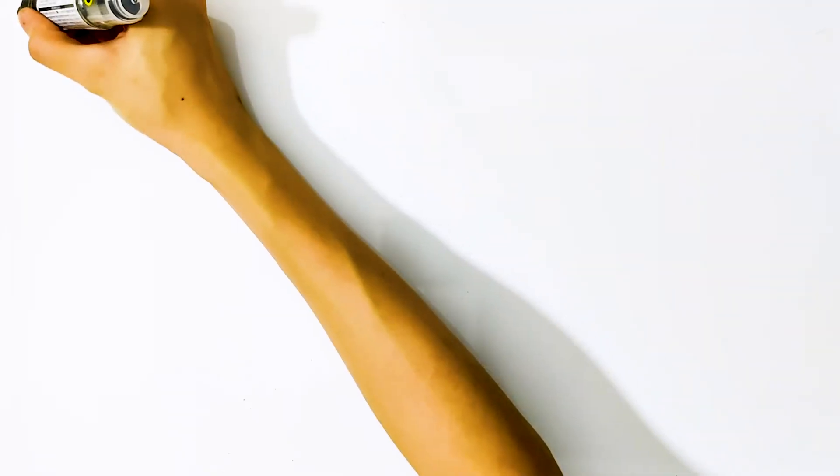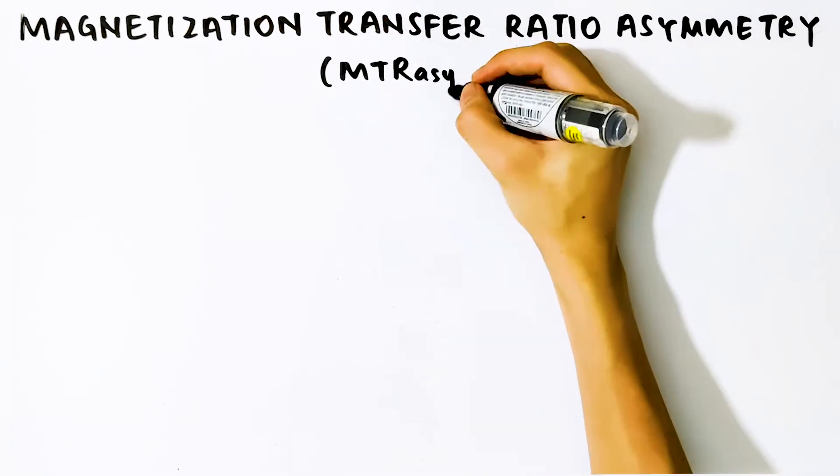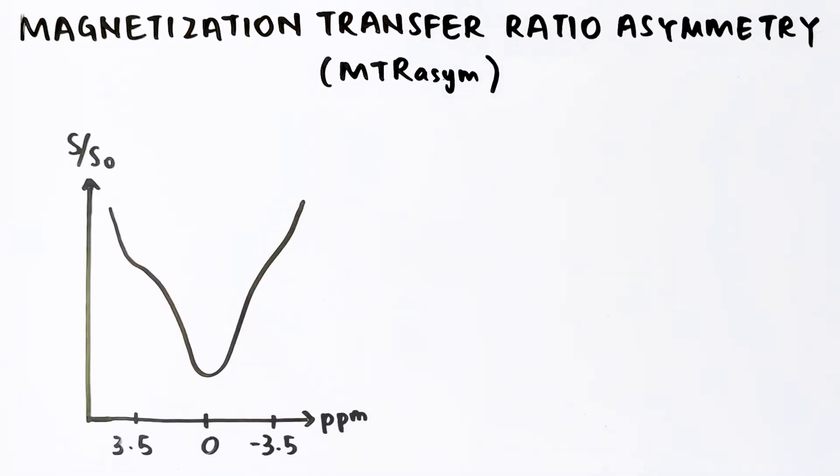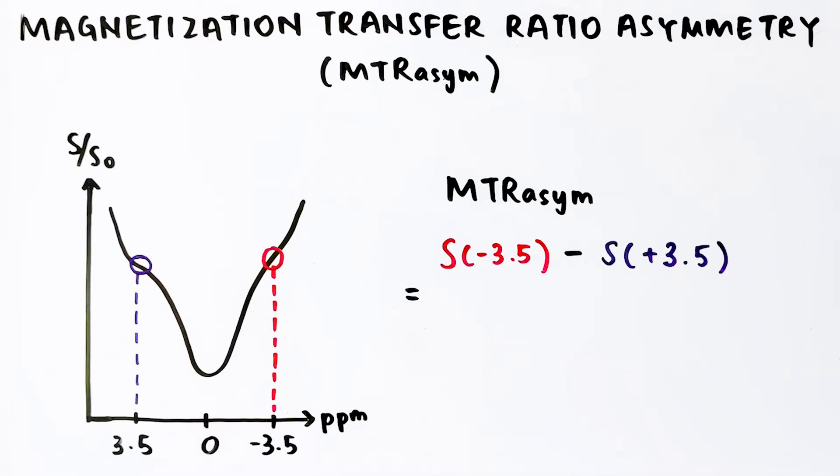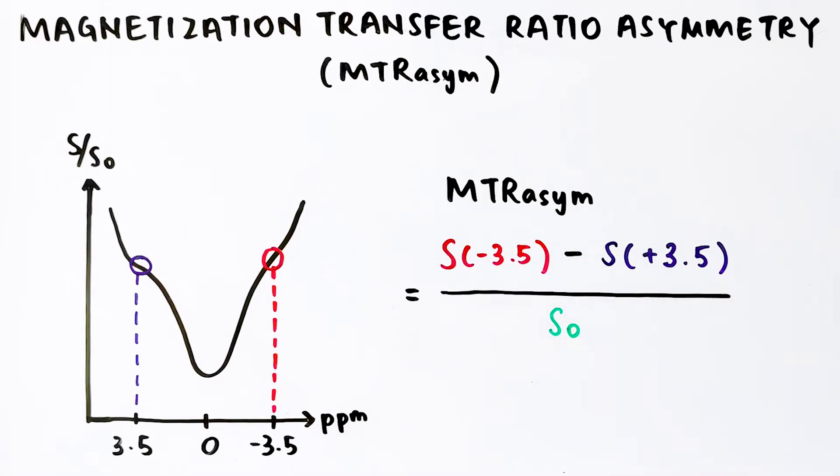The most commonly used quantification method is a model-free method known as magnetization transfer ratio asymmetry, denoted as MTR asymmetry. The calculation is done by taking the difference between a signal at the opposite frequency offset, negative 3.5 parts per million as a reference, and the signal at the amide proton resonance at 3.5 parts per million, normalized by the unsaturated signal, for every voxel.